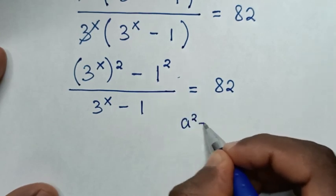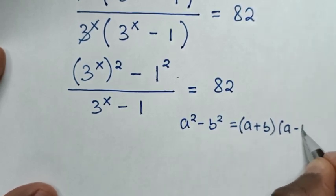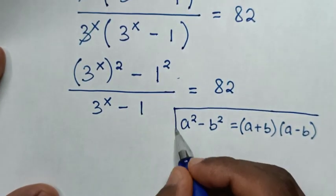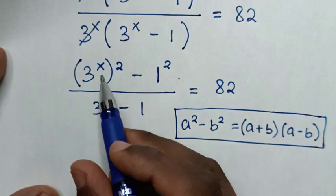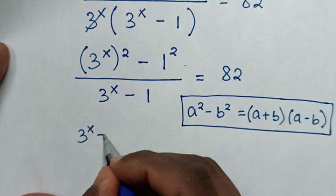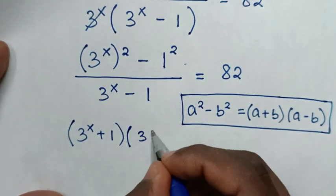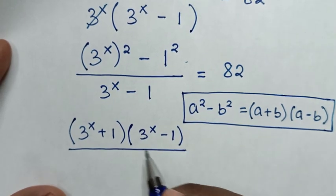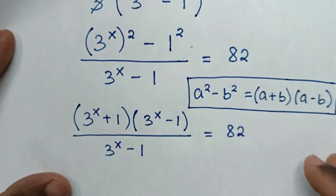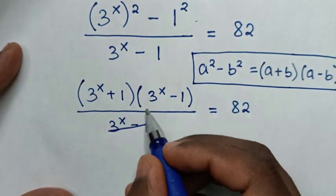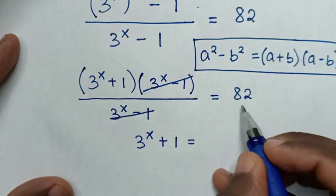We apply the difference of squares rule: a² minus b² equals (a plus b)(a minus b). So the numerator (3^x)^2 minus 1 becomes (3^x plus 1)(3^x minus 1). The (3^x minus 1) terms in numerator and denominator cancel, leaving 3^x plus 1 equals 82.